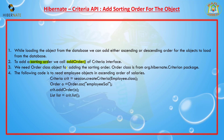The Order class object is needed for adding the sorting order, and it is available in the org.hibernate.criterion package. In a simple code snippet, createCriteria() gives you the Criteria reference, passing the class object of a POJO class. Then you create an Order object — there is a static method called asc() available in the Order class.